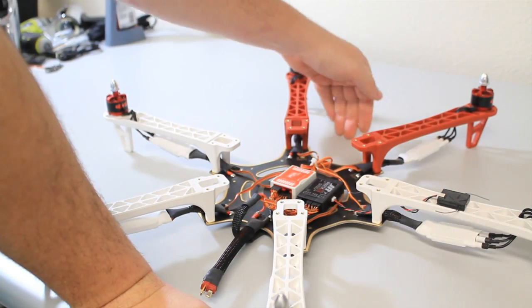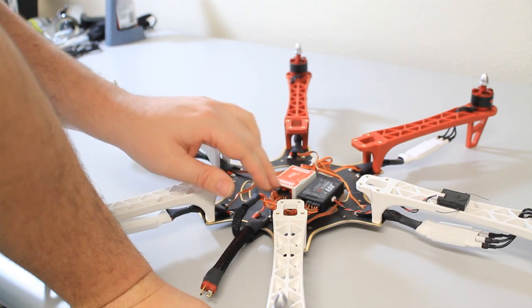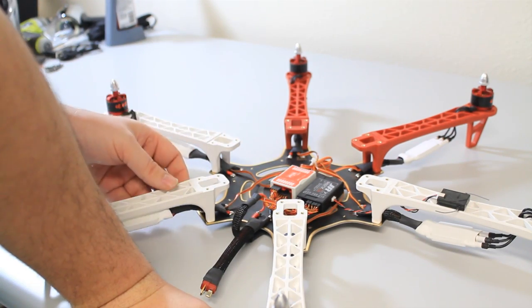On the Naza, your motor inputs are facing the front and your inputs for your receiver are facing the rear. That's how it needs to be set up.